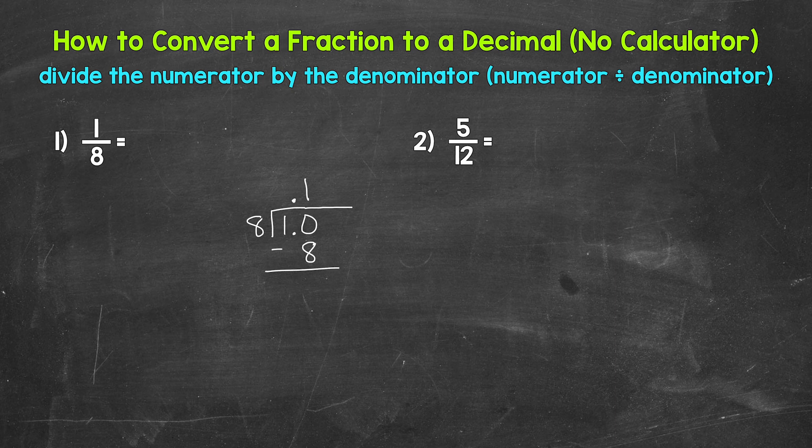Subtract 10 minus eight is two. We don't have a clean cut zero there at the bottom. So we can use another zero that we can bring down to continue on. Now, we have 20, 20 divided by eight. How many whole groups of eight in 20? Well, two. That gets us to 16. Two times eight, 16, subtract 20 minus 16 is four.